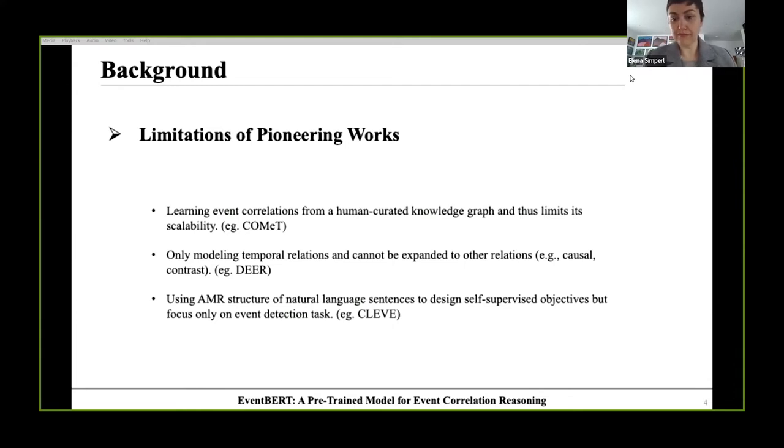Comet learns event correlations from a human-curated knowledge graph and thus limits its scalability. Dear only models temporal relations and cannot be expanded to other relations, for example, causal contrast. CLEVE uses AMR structure of natural language sentences to design self-supervised objectives but focuses only on event detection task.